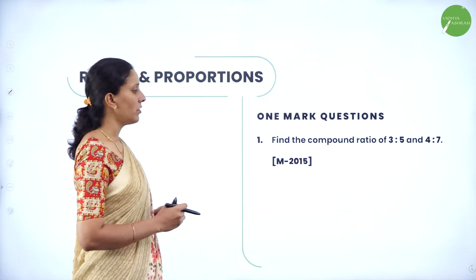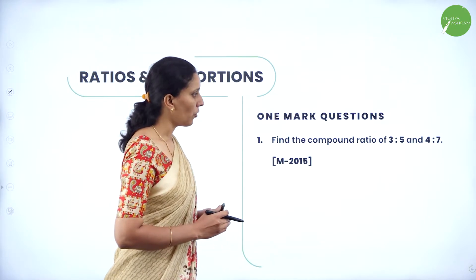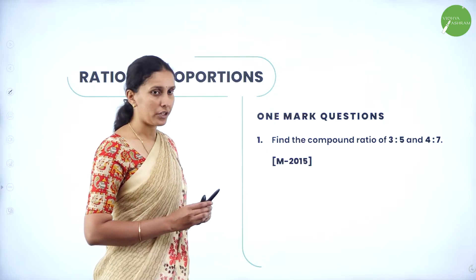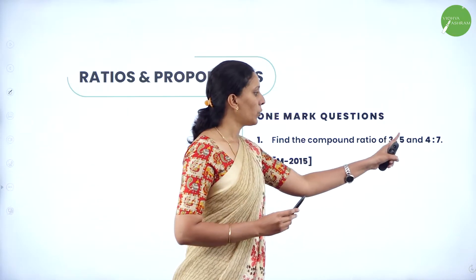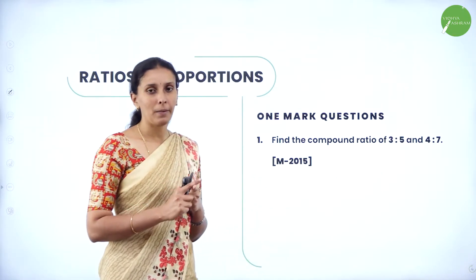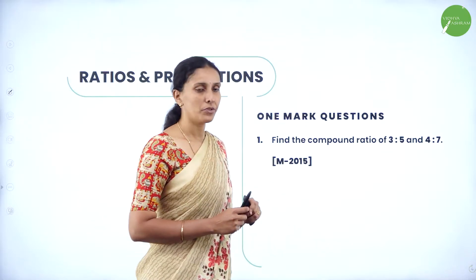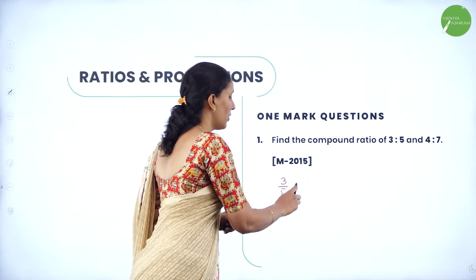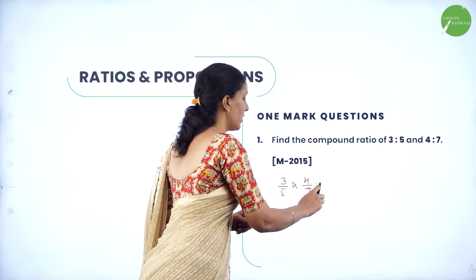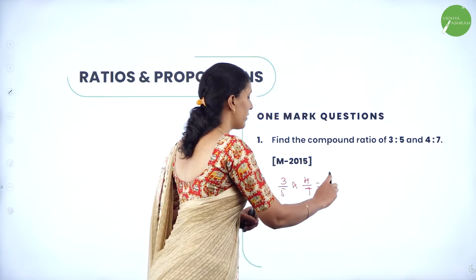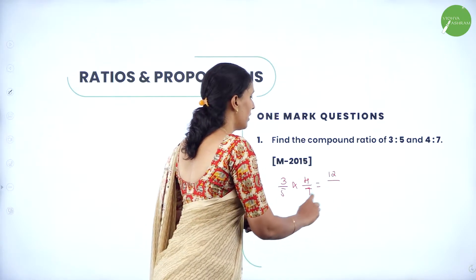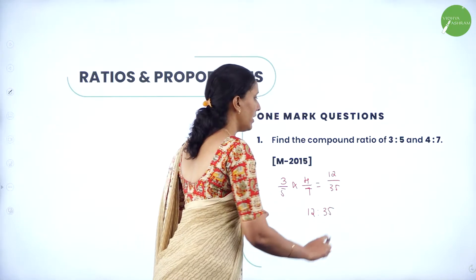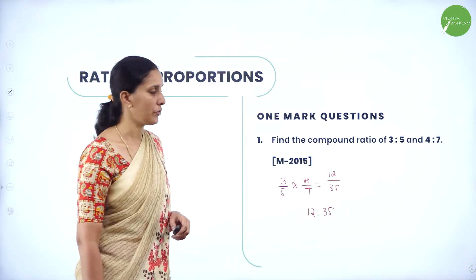Let's solve a one-mark question. Find the compound ratio of 3 is to 5 and 4 is to 7. What do we mean by compound ratio? We have two ratios; you have to multiply them. So 3/5 multiplied by 4/7 gives us 12/35. Therefore, 12 is to 35 is the compound ratio.